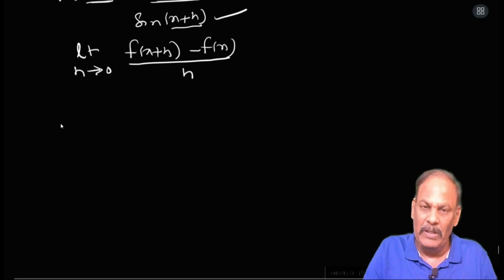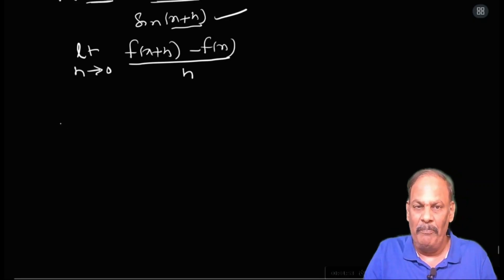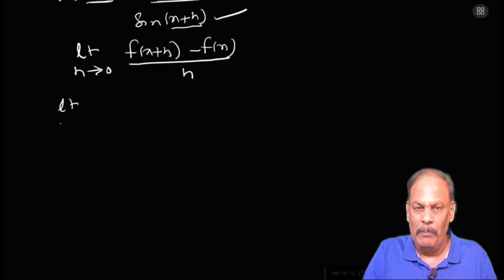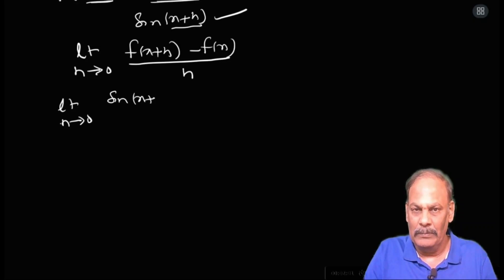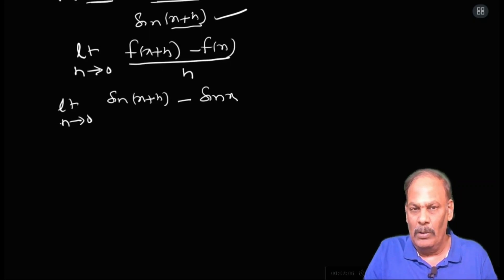Substituting the values: limit h tends to 0 of [f(x+h) minus f(x)] by h becomes limit h tends to 0 of [sin(x+h) minus sin x] whole by h.